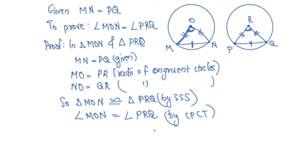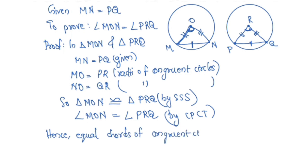Hence, equal chords of congruent circles subtend equal angles at the centers.